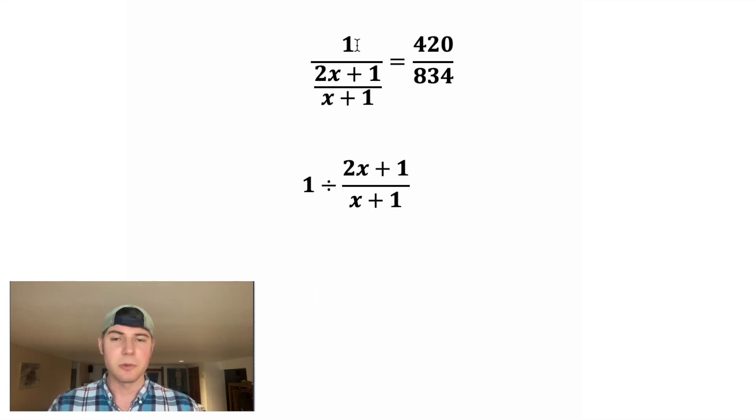With this right here, we're doing the division thing again. We're doing 1 divided by this fraction down here. Anytime we do that, we can change the divide to a multiply and flip the fraction. And then 1 times something is just the something.